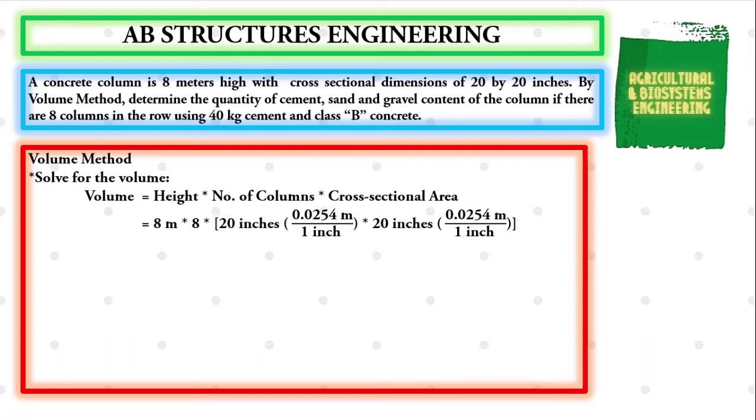We have to convert inches to meters using the conversion factor 1 inch equal to 0.0254 meters. We simply compute and we have 64 meters times 0.508 meters times 0.508 meters. We get the product, giving us a value for our volume to be 16.5161 cubic meters.